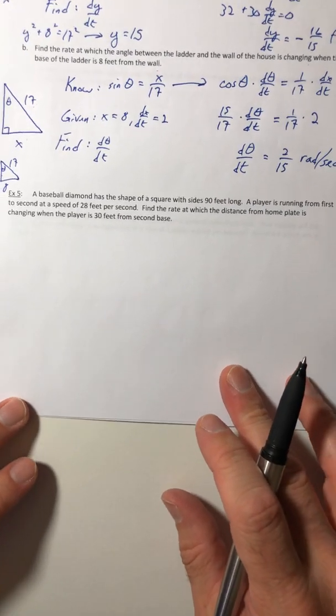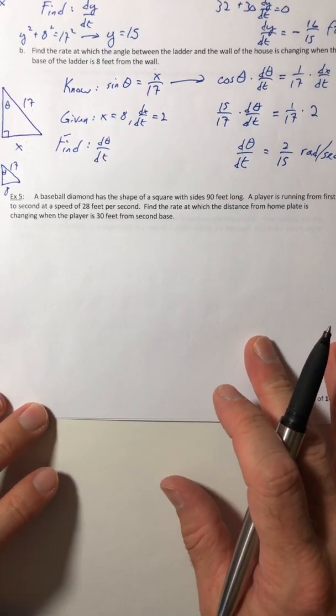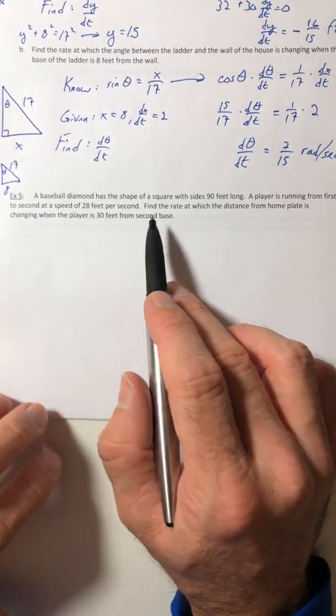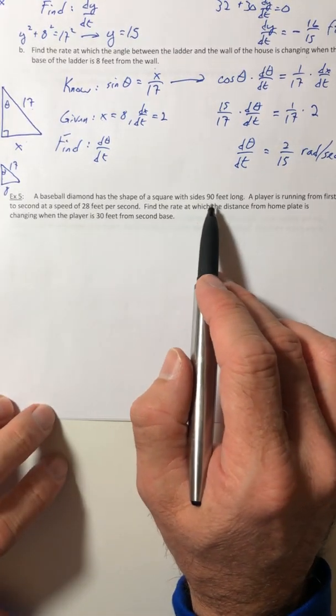All right, example five, continuing on with the related rates. A baseball diamond has the shape of a square with sides 90 feet long.